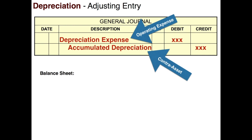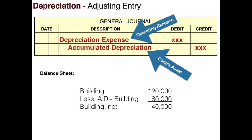On the balance sheet, for example, you would have your building at whatever you paid — say $120,000 — and if we've depreciated it for a few years with total accumulated depreciation of $80,000, we would have a book value or net value for the building of $40,000. The word 'net' simply means something has been taken out — in this case depreciation. Another format you might see is just one line: 'Building, common net, $40,000.' In that case you'd go to the notes to the financial statement to find the actual cost and total accumulated depreciation.